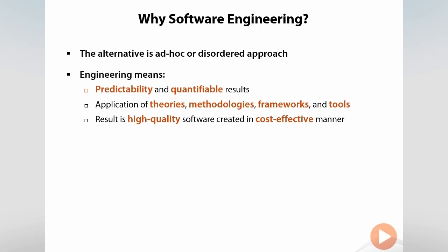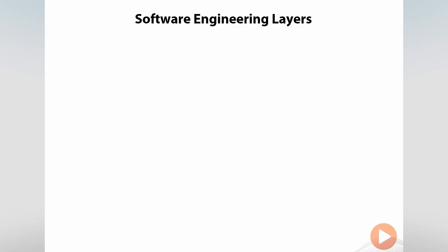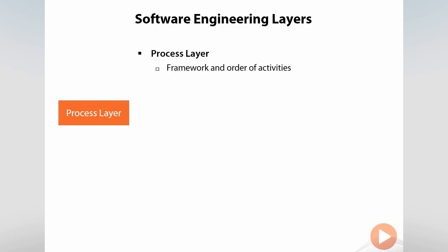Software engineering in practice is built of three layers. The first layer is that of the process. The process defines the framework and the order around the various activities undertaken in a software project. It sets out how activities of phases such as requirements, design, construction, and testing are undertaken.